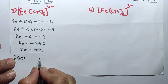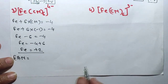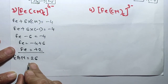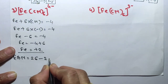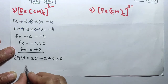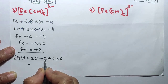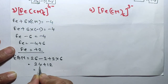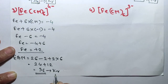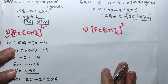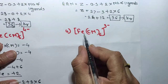Now calculate the effective atomic number for Fe(CN)₆⁴⁻. EAN equals Z minus oxidation state plus 2 into number of ligands. Iron's atomic number is 26, minus oxidation state 2, plus 2 into 6 ligands: 26 minus 2 is 24, plus 12 equals 36. 36 is the atomic number of krypton, so Fe(CN)₆⁴⁻ is a stable complex.